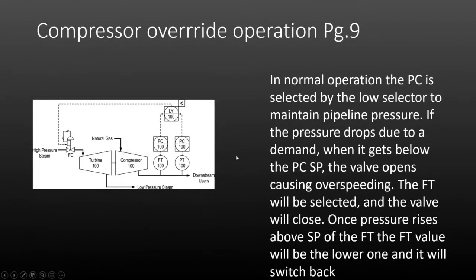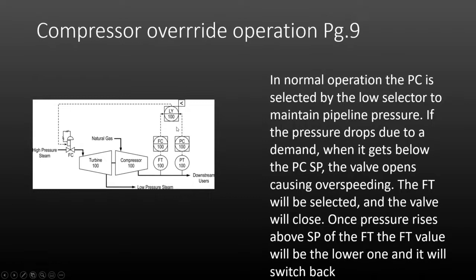Here we have a compressor with an override strategy — flow and pressure are measured on the output of the compressor, and we have a low selector. Almost all applications covered today — nine out of ten — are going to be low select. The reactor temperature example is the only one in the entire ILM that uses a high selector. In normal operation, the pressure controller is selected by the low selector in order to maintain the pipeline pressure.